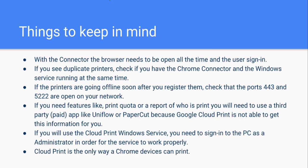Things to keep in mind: with the connector, the browser needs to be open at all times and the user signed in. If you see duplicates, check if you have both the Chrome connector and the Windows service running at the same time — if so, use only one. If printers go offline shortly after registering, check that ports 443 and 5222 are open on your network. If you need features like print quotas or reports of who is printing, you'll need a third-party paid app like UniFlow or Papercut, as Google Cloud Print does not currently provide this. If you use the Cloud Print Windows service, you need to sign in to the PC as the administrator. Cloud Print is the only way a Chrome device — Chromebook or Chromebox — can print.